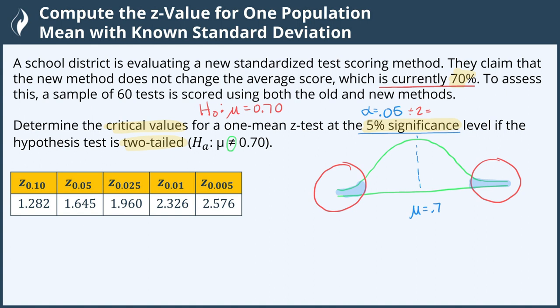0.05 divided by 2 is 0.025. We were also asked to find the critical values, meaning that we have a two-tailed test.